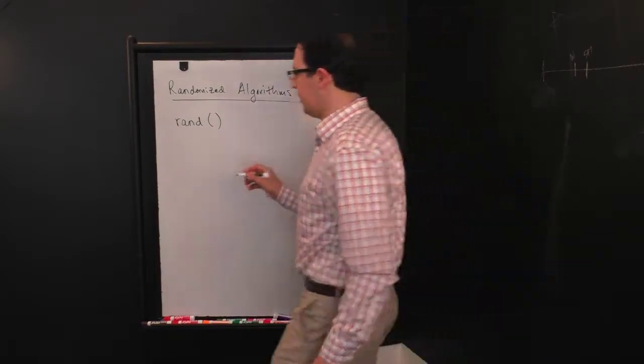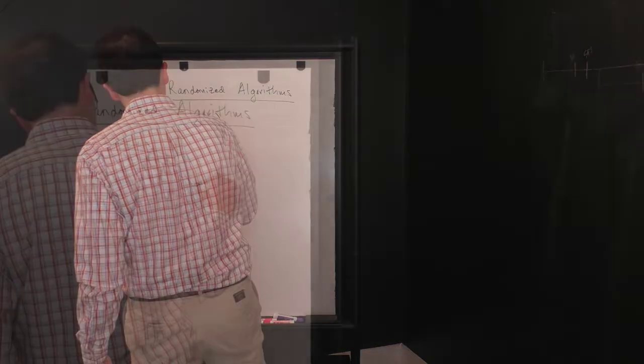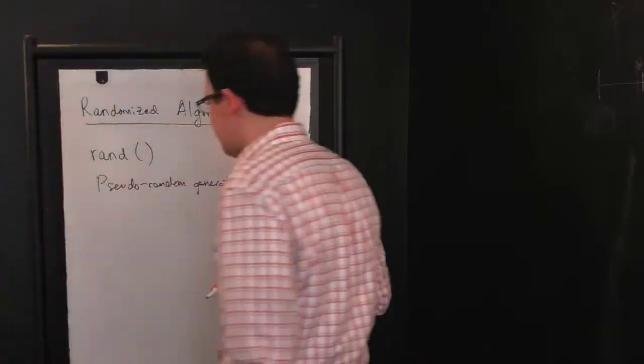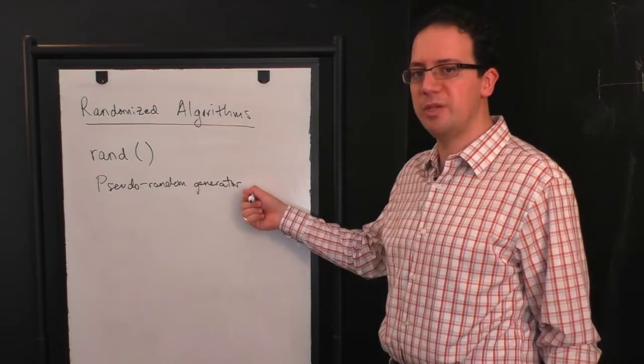Usually what this comes from is what's called a pseudorandom generator. It's called pseudorandom because it's not actually random, it's actually a deterministic function.